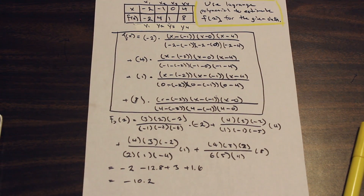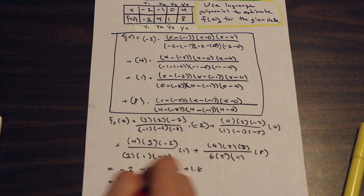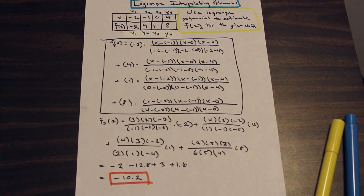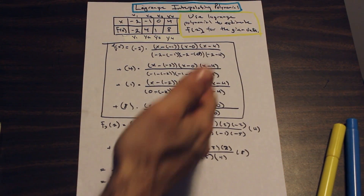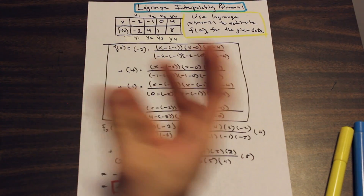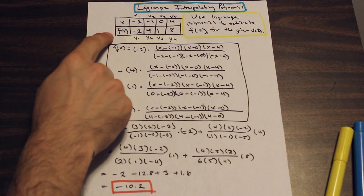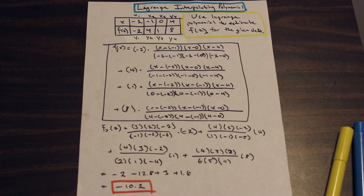So −10.2 is f(2), calculated using the Lagrange polynomial to estimate f(2) from the given data. Essentially, if you were to plot this in MATLAB, it would be like a curve of best fit through the data points, and when x = 2 on that curve, the y-value is −10.2. Thanks for watching — I hope you learned something, and as always, like and subscribe!